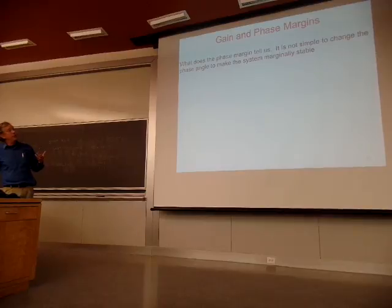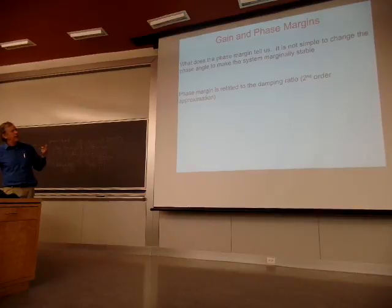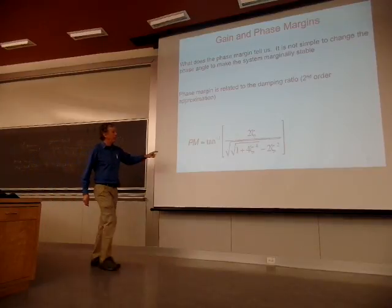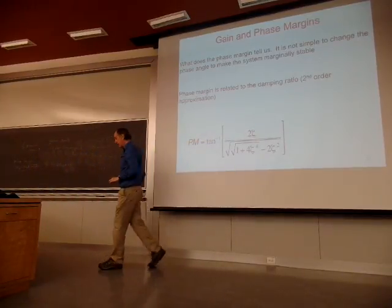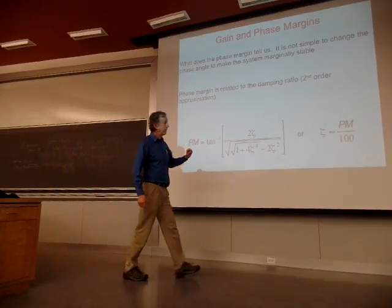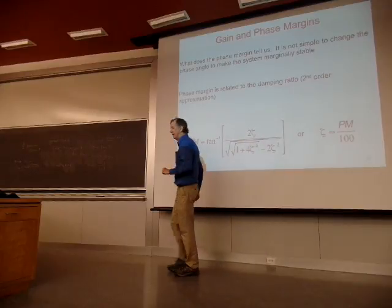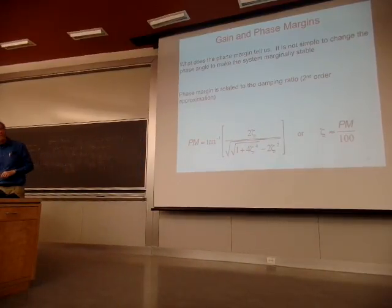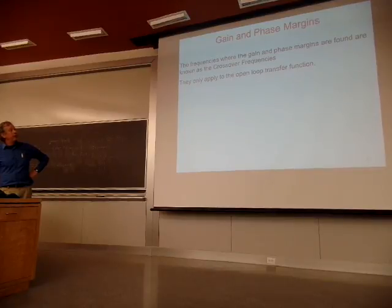Phase margin really has something I have so much to decide for. Well, you can't believe the compensators, but phase margin relates to the damping ratio for second order approximation. Phase margin is really arctangent of this rather nasty equation for the damping ratio, but it simplifies for most systems to approximately the phase margin over 100. A few other definitions of frequency of the gain and phase margin are possible for frequencies, and they apply only to the open loop transfer function. We don't use that too much in the state space.